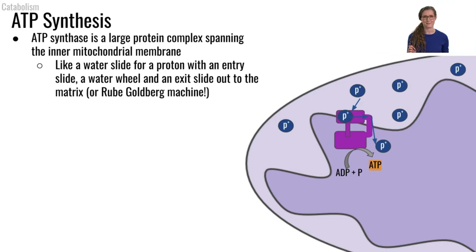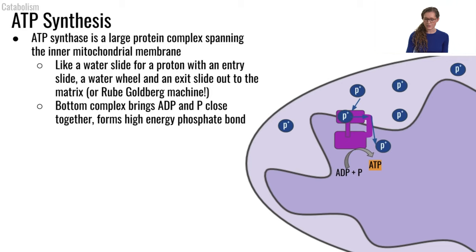What's actually going to be happening here is that a proton, of these protons that we have in very high concentration in the inner membrane space, they are going to enter the top side of ATP synthase. From there, the ATP synthase is going to rotate and cause that proton to go through the equivalent of a water wheel.